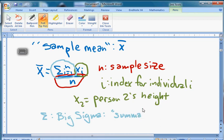And it tells us what to do. In particular, we read this as the sum from i equals one to n.